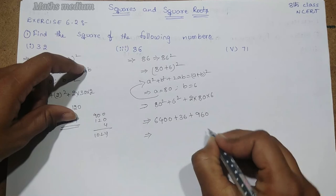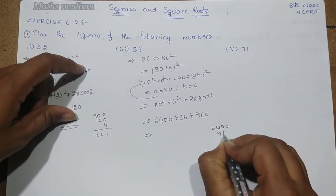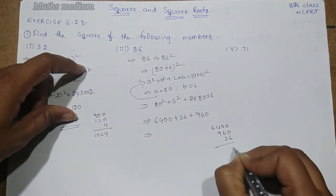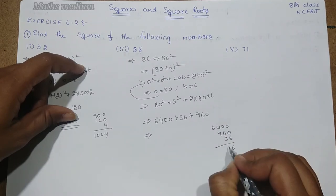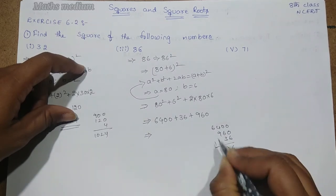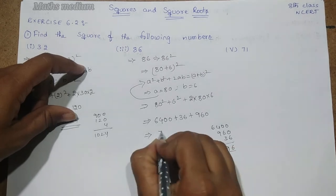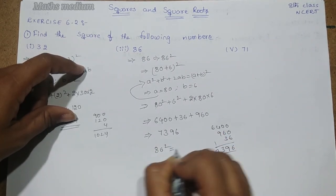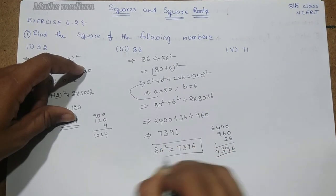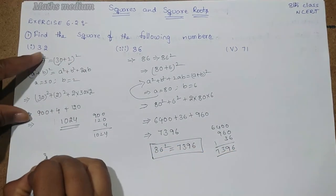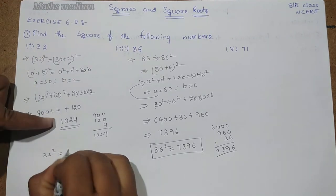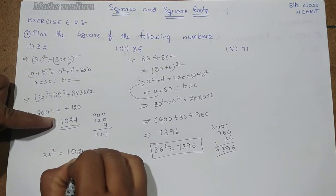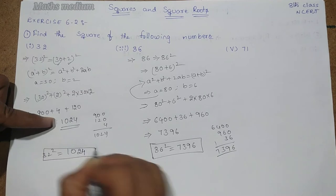Now, add 6400, 960, and 36. 6, 9, 13, 7. That is 7396. So 86 square is equal to 7396 is the answer. And 32 square is equal to 1024.